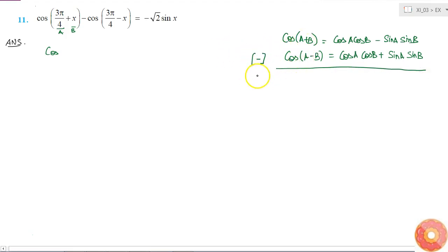If I subtract this from this, then I will get cos(a + b) minus cos(a - b). This is equal to, cos a cos b will get cancelled. So I am left with minus 2 sin a sin b.